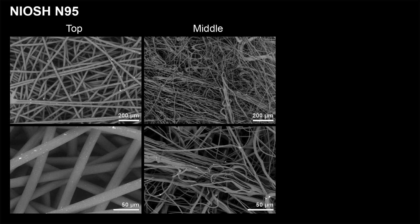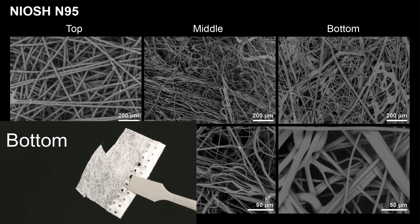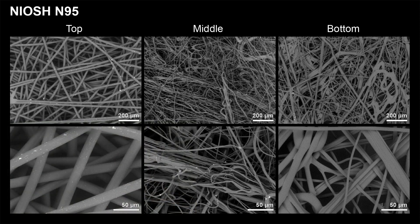This structure allows N95 respirators to be much more effective in catching small nanoparticles such as the coronavirus. Furthermore, this layer is also electrostatically charged, which allows it to attract and trap oppositely charged particles. The bottom layer of the N95 is also quite different from level 1 and level 3 masks — it is made of a combination of thin and thick fibers packed together, and it is expected that this layer will also aid in filtering out small particles.